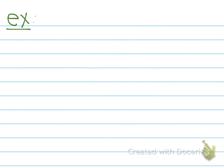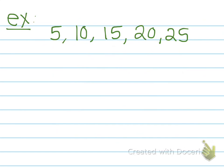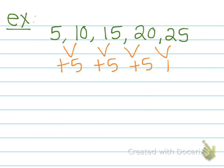Another example: we could have the sequence 5, 10, 15, 20, and 25. For each of these terms to get to the next, we would add 5, add 5, add 5, and add 5. So our common difference is 5. And because we have a common difference, both this and the other example are called arithmetic sequences.